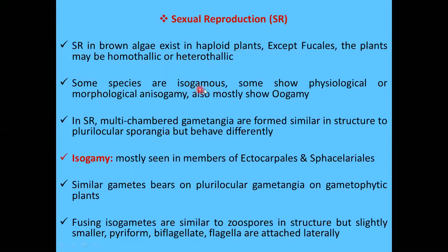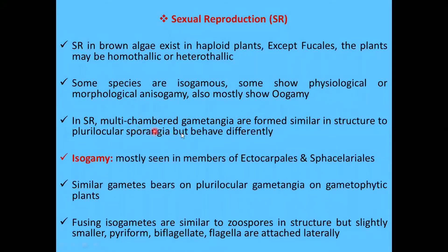Some species are isogamous, meaning the gametes involved are similar in structure. Some show physiological or morphological anisogamy, and mostly the members of brown algae show oogamy. In sexual reproduction, multichamber gametangia are formed, which are similar in structure to plurilocular sporangia but behave differently.